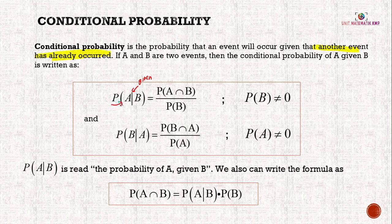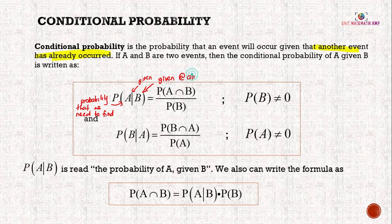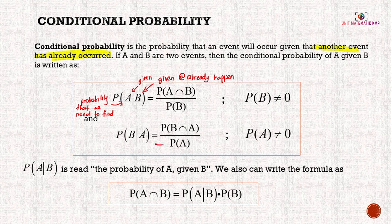The one at the front is the probability that we need to find, and at the back is the probability that is already given or already happened. Probability of A given B is read as the probability of A given B. We can also write the formula as P(A∩B) = P(A|B) × P(B) — we just rearrange the equation.